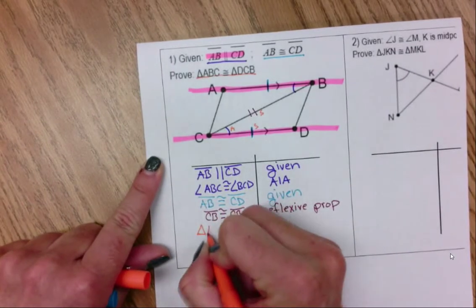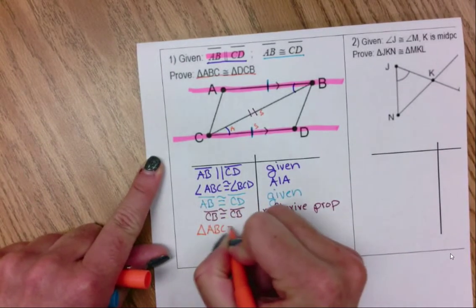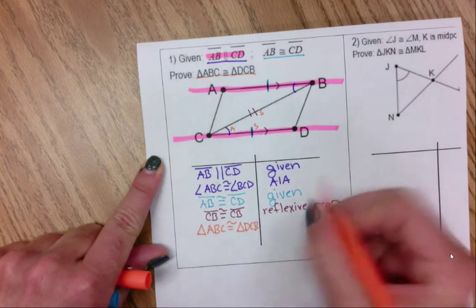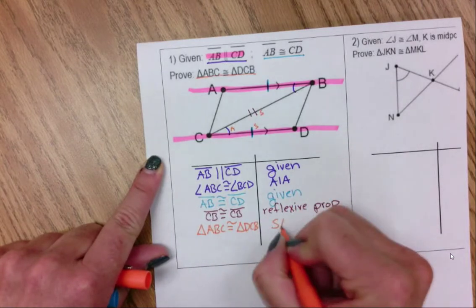To say triangle ABC is congruent to triangle DCB. And this would be side, angle, side.